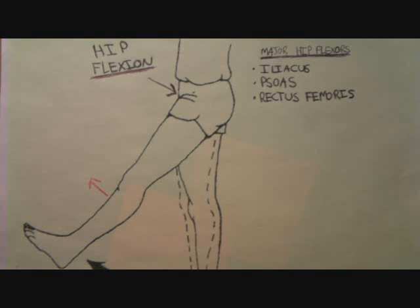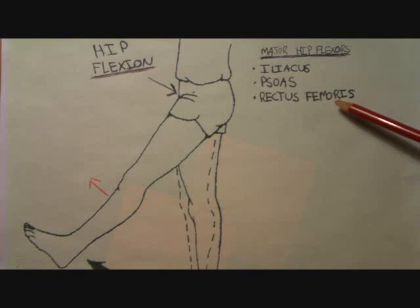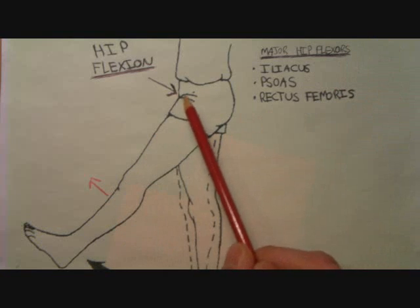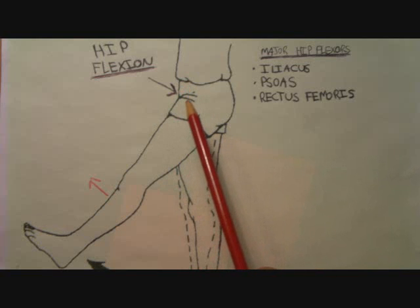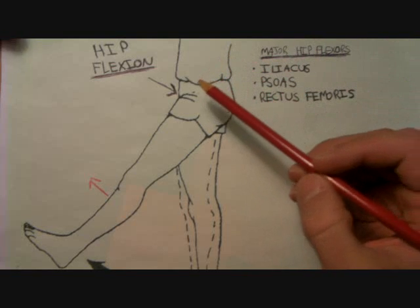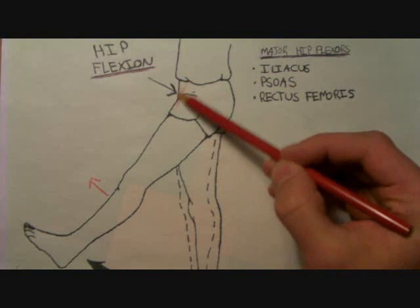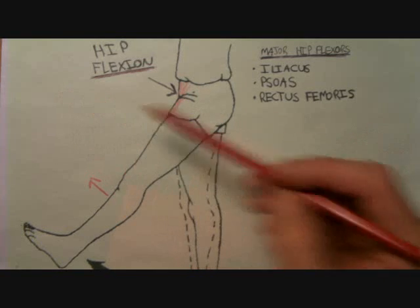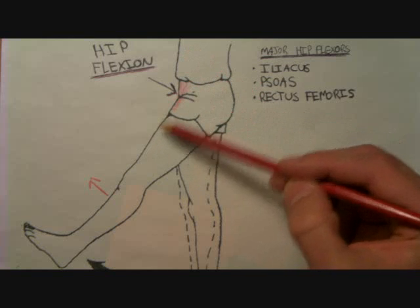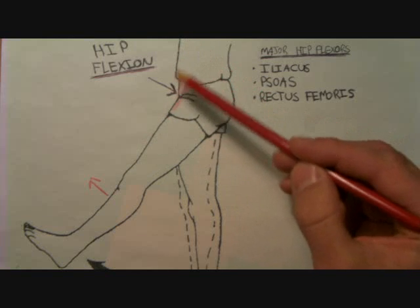The next group of muscles I want to talk about are the hip flexors. There are three major true hip flexors: the iliacus, the psoas, and the rectus femoris. The rectus femoris is also a quadriceps, but because it crosses two joints — the knee and the hip — it also helps with hip flexion. When these muscles are located right here in the front of the hip and they contract, they pull the leg forward and the angle here decreases, so it's hip flexion.